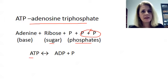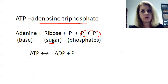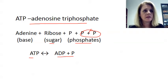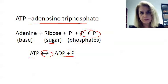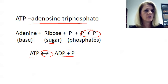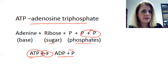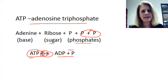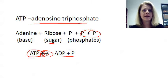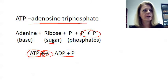So ATP — if you break one of those phosphates away and allow the energy to be released, you get ADP plus P. This is a reversible reaction. If you put the P back onto ADP, you're storing the energy and you get ATP. Then again you can break the phosphate off and release the energy. So it's just a back and forth between making ADP plus P and ATP — releasing and storing, breaking and making those bonds.